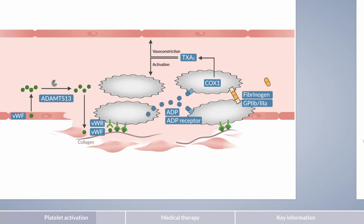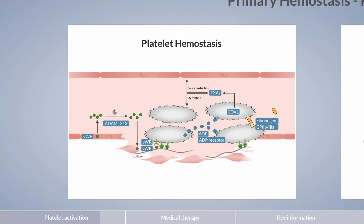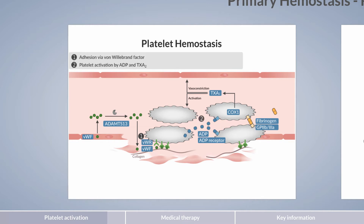Up to now, we've presented the most important aspects of platelet hemostasis. Let's briefly summarize. Platelet hemostasis starts with adhesion mediated by von Willebrand factor. As a result, platelets are activated and release ADP and thromboxane A2, which furthers platelet activation. Platelets are subsequently connected to one another, a process termed aggregation. During this process, the fibrinogen receptor glycoprotein 2B3A plays a central role. Up until this stage, the thrombus formed mainly contains platelets but not red blood cells. Therefore, it is also termed white thrombus.